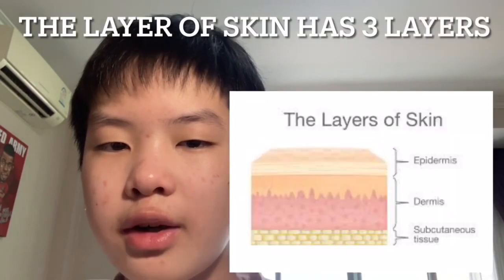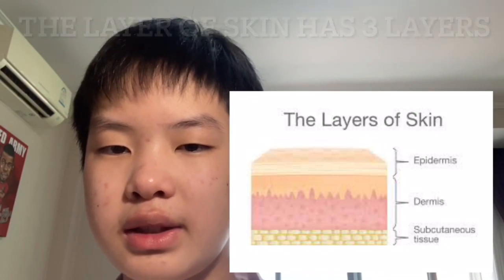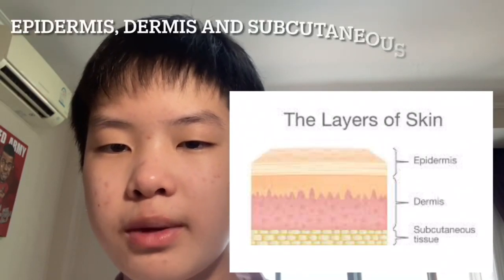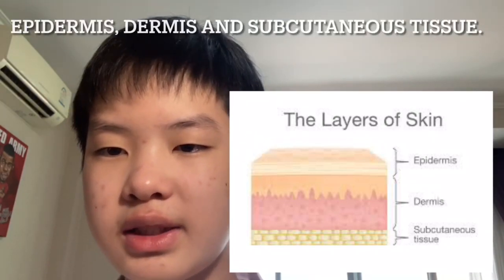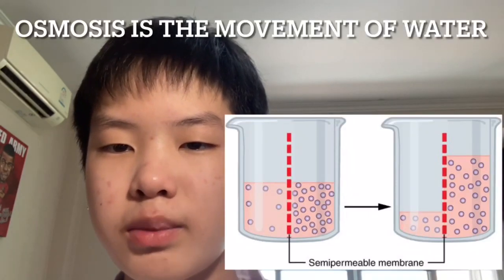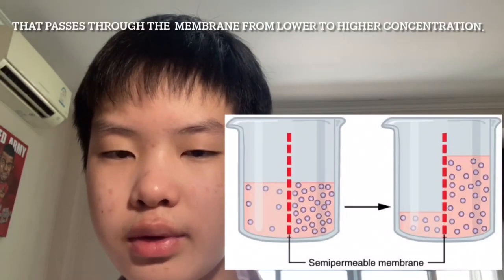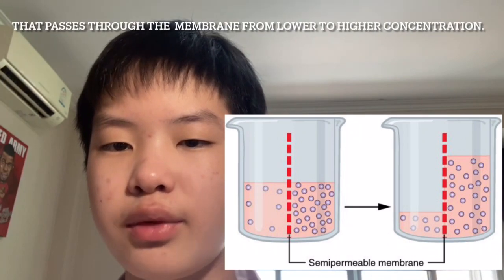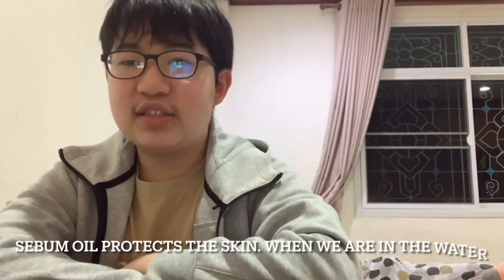Keratin dead cells are the dead cell layer of the stratum cornea that protects you from water loss. The layer of skin has three layers: epidermis, dermis, and subcutaneous tissue. Osmosis is the movement of water that passes through the cell membrane from lower to higher concentration. Sebum oil protects the skin.